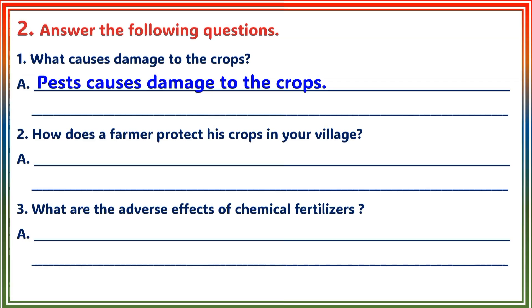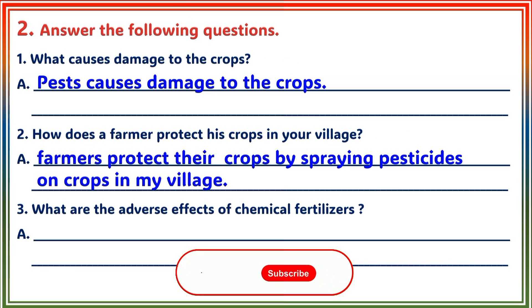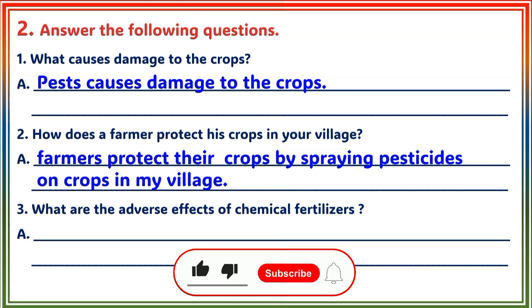Question 2: How does a farmer protect his crops in your village? Answer: Farmers protect their crops by spraying pesticides on crops in my village.